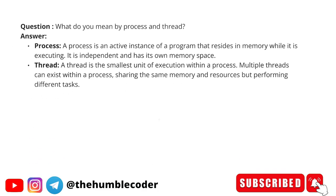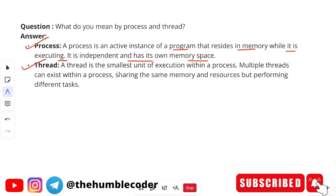What do you mean by process and thread? This is a question from operating systems. A process is an active instance of a program that resides in memory while it is executing — it is independent and has its own memory space. A thread is the smallest unit of execution within a process. Multiple threads can exist within a process, sharing the same memory and resources but performing different tasks.